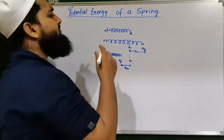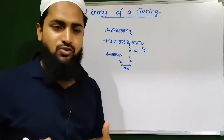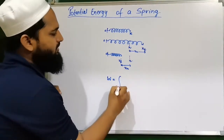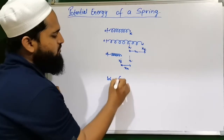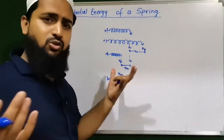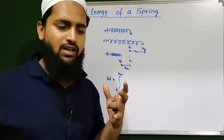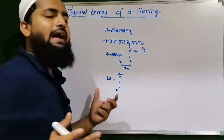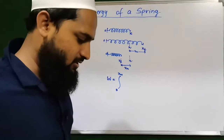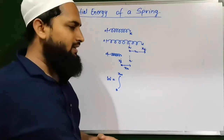This is the spring force. Work done by a force will be the integral from zero to X_M, which means X_M displacement. Or you can write it from initial to X_final. It is simple: work is the force that causes motion or displacement, and that force is the spring force.